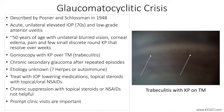Differential diagnosis includes ocular hypertension, acute angle closure, neovascular glaucoma, steroid response glaucoma, uveitic glaucoma, and Fuchs heterochromic iridocyclitis. It is worth noting that Fuchs is also unilateral, but rarely has IOP elevation to the degree seen with glaucomatocyclitic crisis, and the inflammation in Fuchs does not respond to anti-inflammatory therapy.